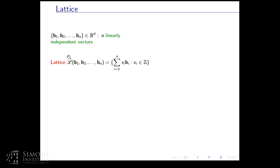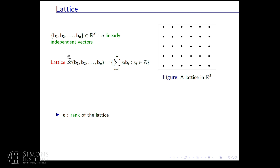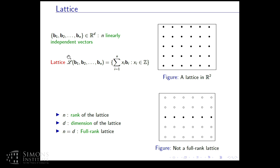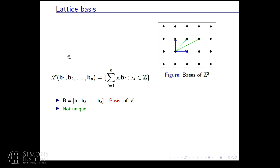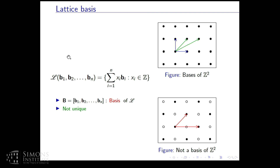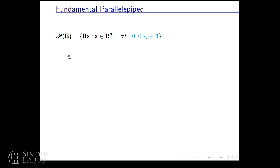As we all know, given N linearly independent vectors, a lattice is an integral combination of these vectors. Here N is the rank of the lattice and D is the dimension. If the rank equals the dimension, we have a full rank lattice. This set of independent vectors is called a basis of the lattice, which is not unique. For example, there are two bases of the Z² lattice shown in the figure.